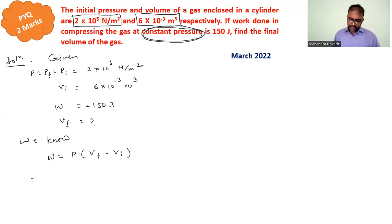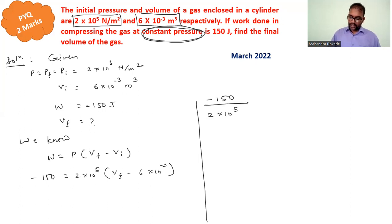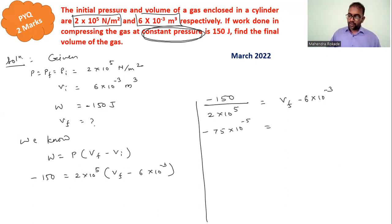So we use: −150 = 2×10⁵ × (Vf − 6×10⁻³). Dividing both sides: −150 divided by 2×10⁵ equals Vf minus 6×10⁻³. This gives us −75×10⁻⁵ = Vf − 6×10⁻³.